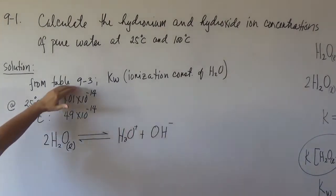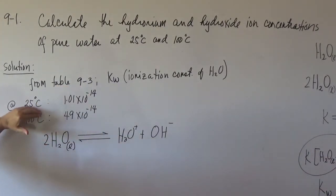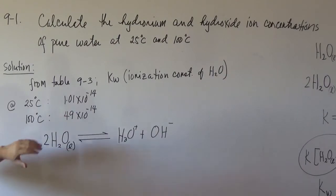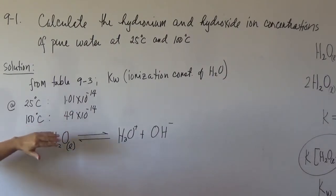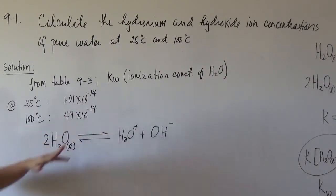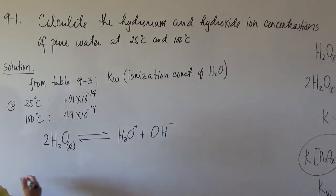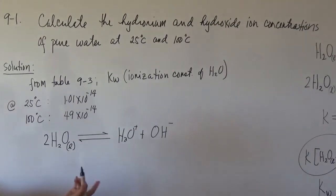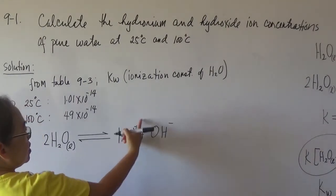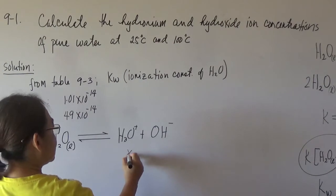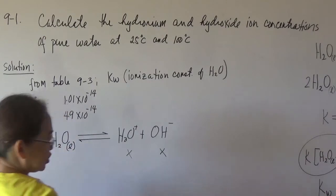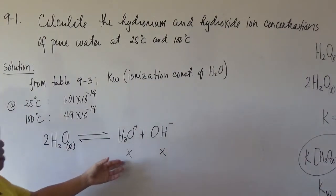So at 25 degrees Celsius, the ionization constant of water is 1.01 times 10 to the negative 14. And at 100 degrees Celsius, it is 49 times 10 to the negative 14. Since both concentrations are unknown, we let the concentration of the hydronium ion as X and the concentration of the hydroxyl ion as X also.